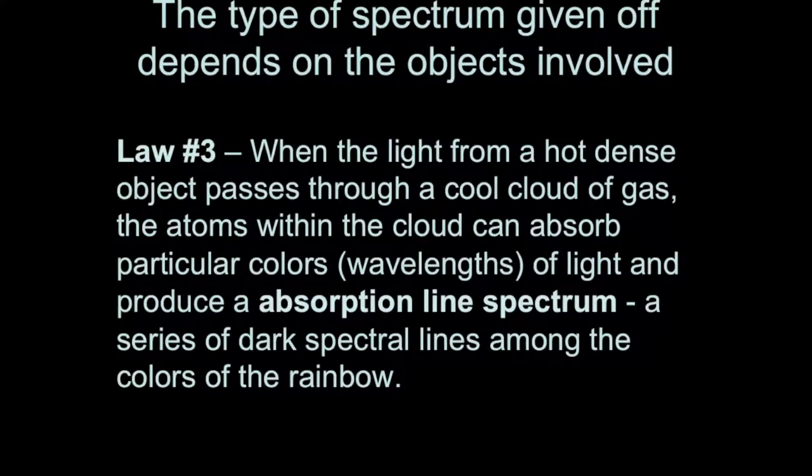This goes back to the third of Kirchhoff's laws that we had discussed before. When light is produced by a hot dense object and that light passes through a cool lower density cloud of gas, the atoms in that cloud are going to absorb certain colors but not all the colors that are emitted by the hot dense object. And so what we get in the end is an absorption line spectrum.